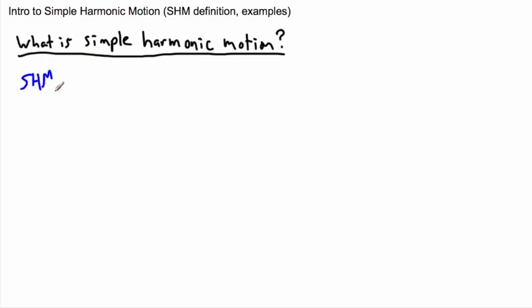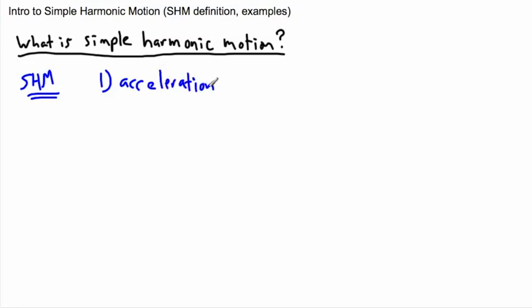So with SHM — simple harmonic motion — we have two conditions happening. The first is that the acceleration is proportional to the displacement. I'll just write down these two conditions and then we'll talk about them.